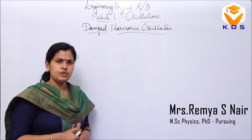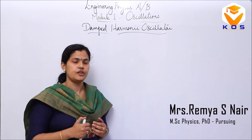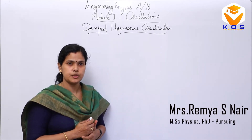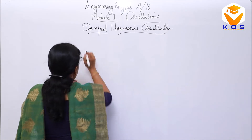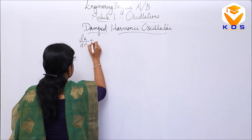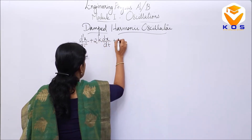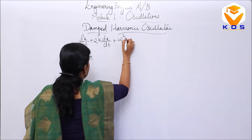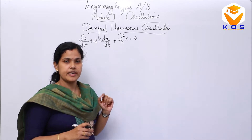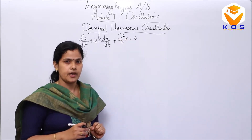Here I am going to derive the solution to the differential equation of the damped harmonic oscillator. The damped harmonic oscillator differential equation is d²x/dt² + 2k(dx/dt) + ω₀²x = 0. This is the representative equation of the damped harmonic oscillator.